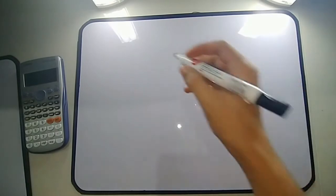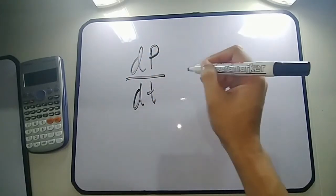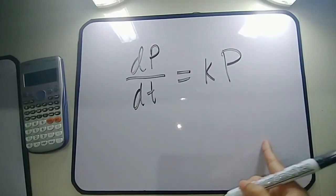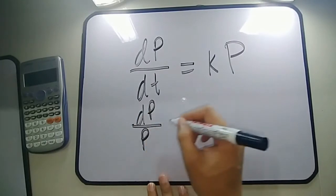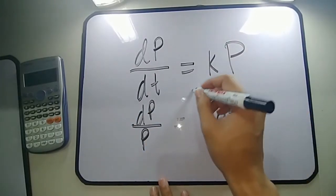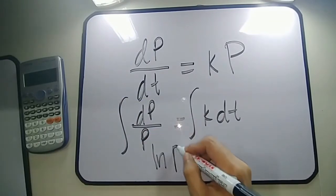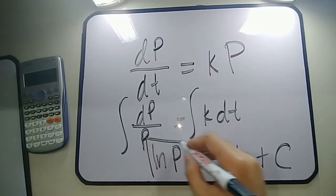Hi guys, so in this video our topic is all about population growth. This is another application of differential equations. The concept is that the time rate of change of the population is directly proportional to the number of population at any time t. Using separation of variables, we have dp over p equals k dt. Integrating both sides, we get ln p equals kt plus c, which is our general solution.